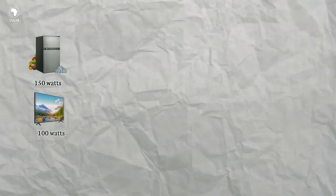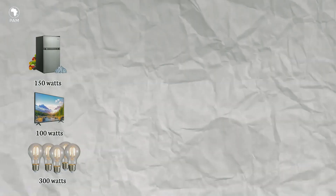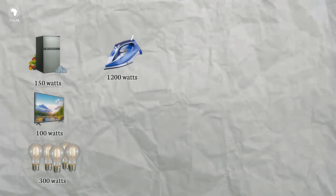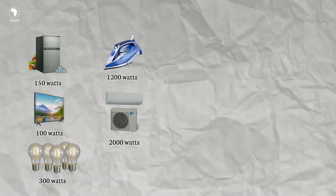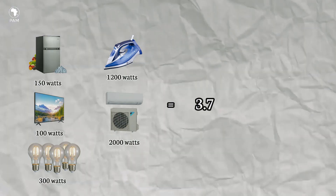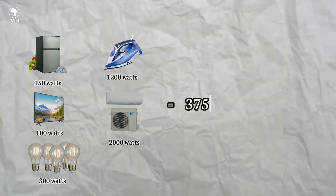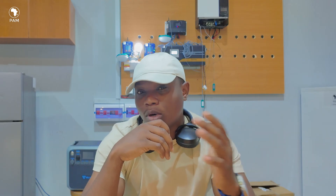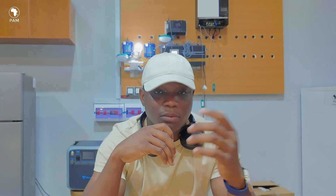For example: one fridge at 150 watts, one TV at 100 watts, five bulbs at 300 watts, one iron at 1200 watts, one air conditioner at 2000 watts — that's around 3.75 kilowatts or 3750 watts. Your 5 kilowatt inverter is still running comfortably.